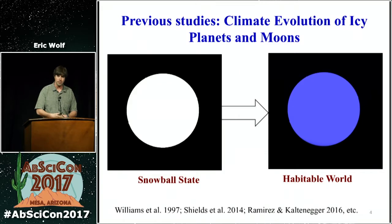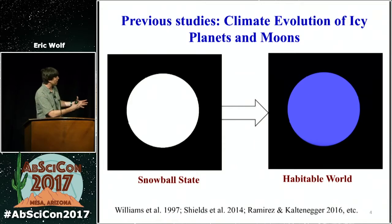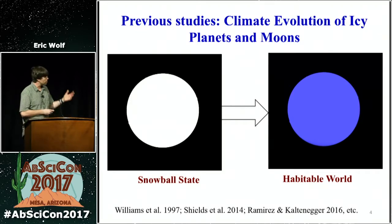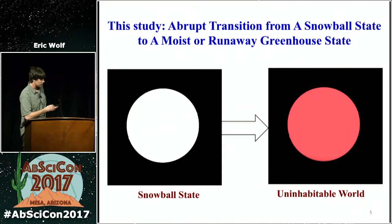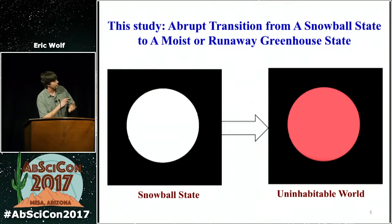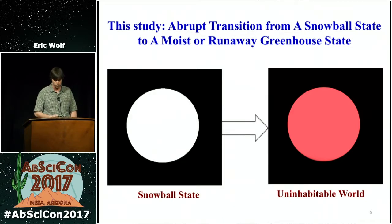So you do have the hysteresis, as Jade described, and you do need more solar insolation to deglaciate the snowball as opposed to entering into it, but the end state, once the ice breaks apart, is typically predicted to be a habitable world. However, in this study, if June does a better treatment of the ice model, you actually see you would transition from a snowball state into an uninhabitably hot world.